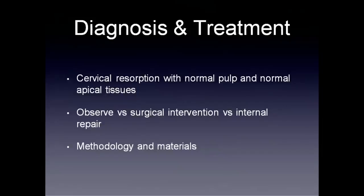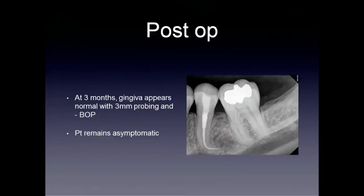That's where one of the newer bioceramic materials comes into play. It has results that appear very similar to MTA, takes less time to set, and is a little more pliable. The other advantage is that we might be able to complete this case in one visit, which is always advantageous for the patient. So that's the material we chose. We were able to go in, place bioceramic after removing the lesion, and use it as an interim material while we completed endodontic therapy. I then removed the bioceramic to place a fresh perforation repair in that area.